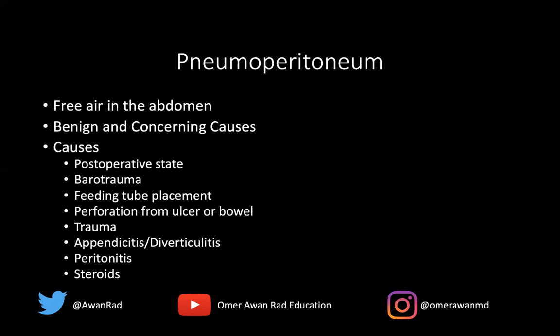Feeding tube placement can also cause pneumoperitoneum if the tube perforates the stomach or duodenum. Perforation from an ulcer — a gastric or duodenal ulcer — or even a bowel perforation, is a common and concerning cause. When you see free air in the abdomen, you want to evaluate whether the bowel has been perforated. Trauma is another important cause: intestinal perforation can result from a motor vehicle collision or penetrating injuries.